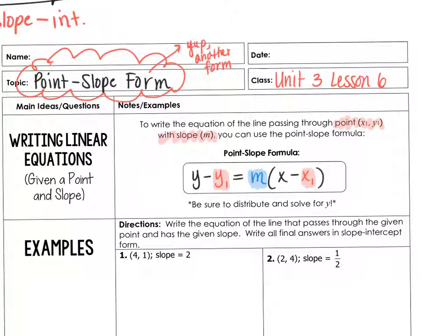In point-slope form, y will remain as y and x will remain as x. You input the given point into the y1 and x1 slots, and you input the given slope into the m slot. From point-slope form, you will then convert it back into slope-intercept form. Keep this formula handy as we go through these problems — eventually it gets memorized. We use point-slope form a lot in upper-level mathematics.